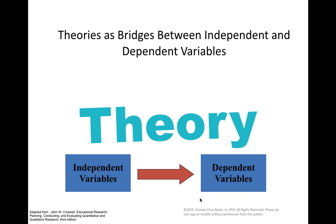Theories serve as bridges between independent and dependent variables. When we attempt to explain relationships between independent variables, taking into account intervening and confounding variables, we try to bridge this gap through theories.